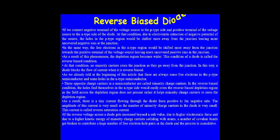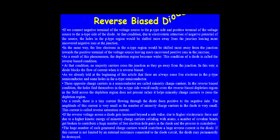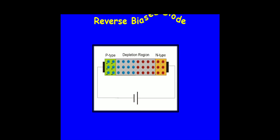If the reverse voltage is increased beyond safe values, the high electrostatic force gives minority charge carriers enough kinetic energy to collide with atoms, breaking covalent bonds and generating a huge number of free electron-hole pairs. This process is cumulative, producing a large reverse current. If not limited by an external resistance, the diode may be permanently destroyed. In the diagram, you can see the wider depletion region with P-type connected to the negative terminal and N-type to the positive terminal.